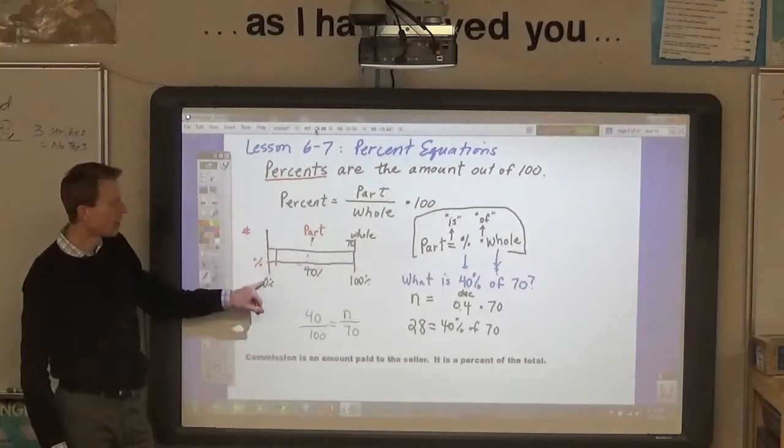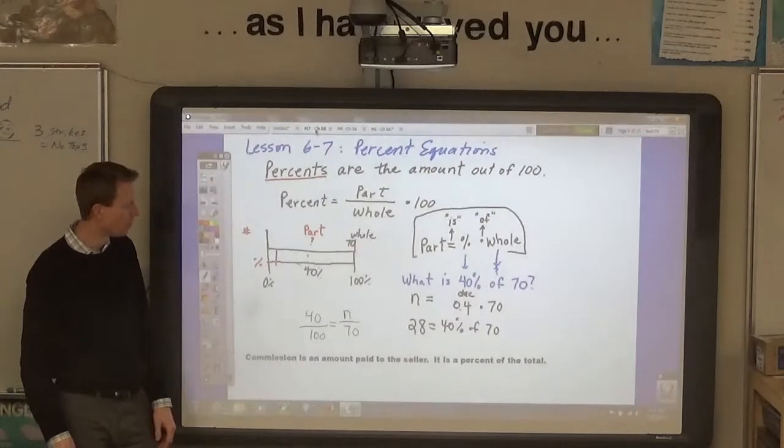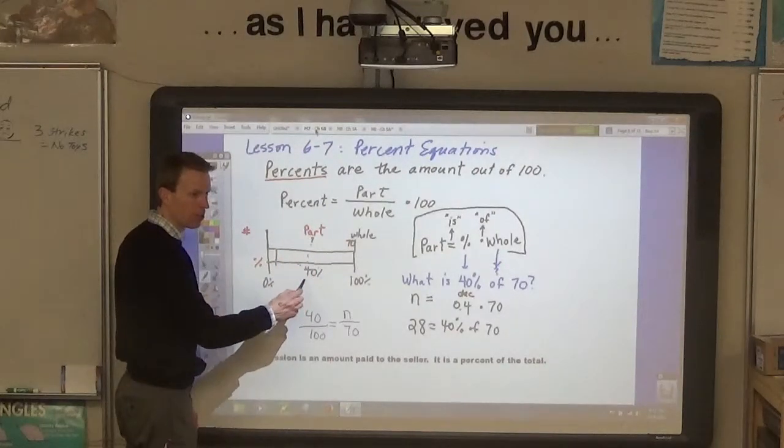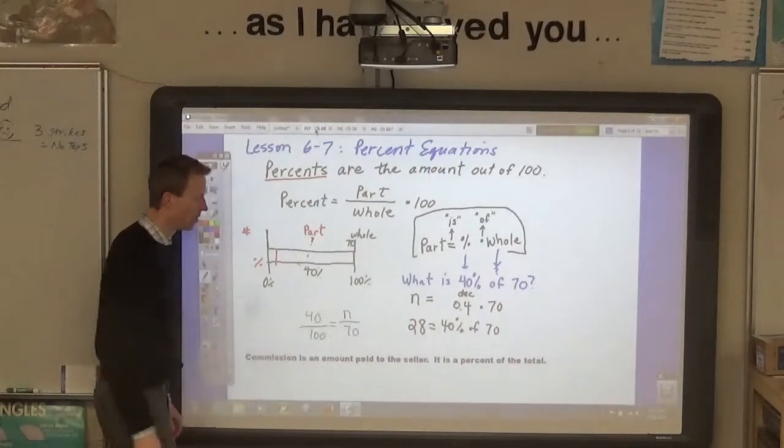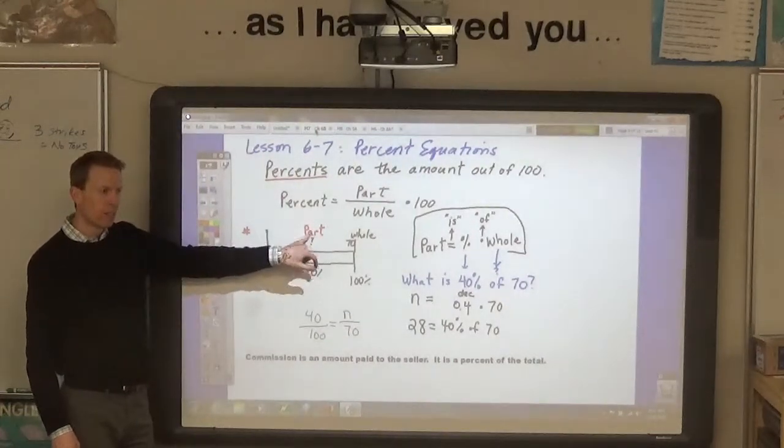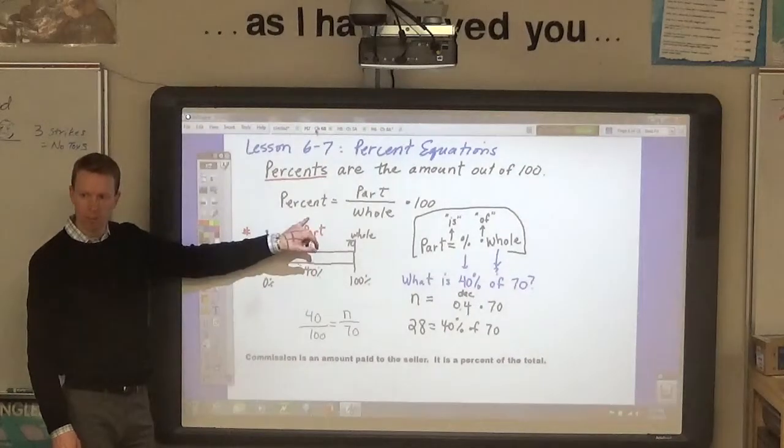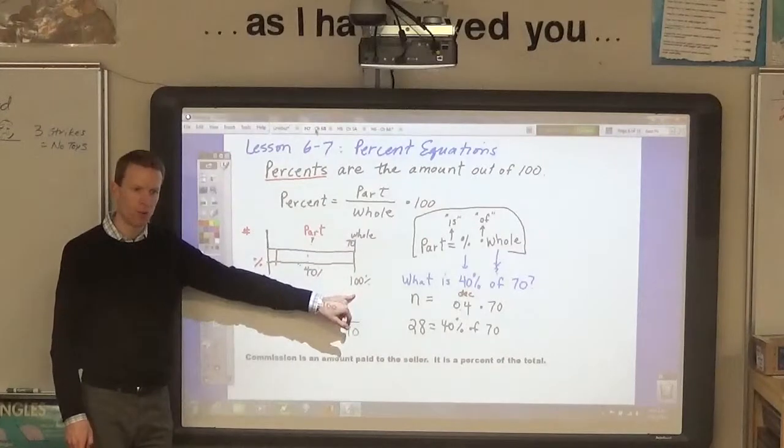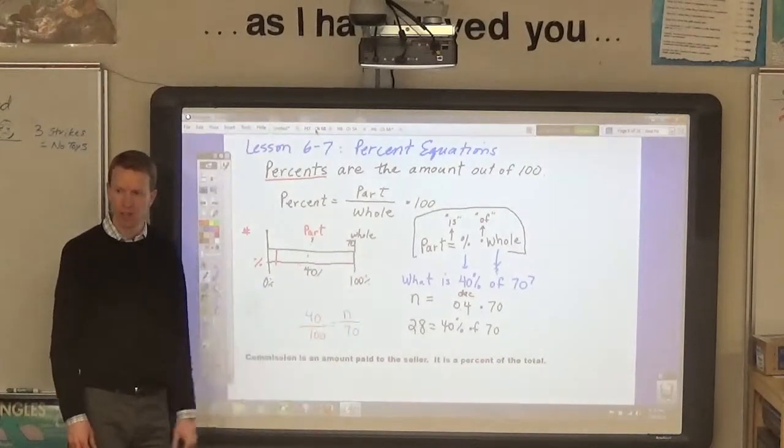And then last time, we talked about this model for percentage. That the part over the whole is equal to the percent number out of 100. So, when you draw it out, you can see equate the part and the percent and the whole over 100.